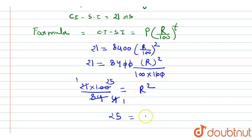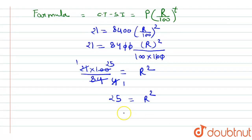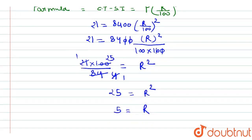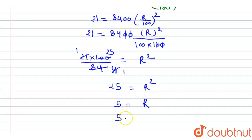25 equals to r squared. Taking square root on both sides, we get 5 equals to r. What is our rate percent? 5 percent per annum is our rate. This is our answer. Thank you.